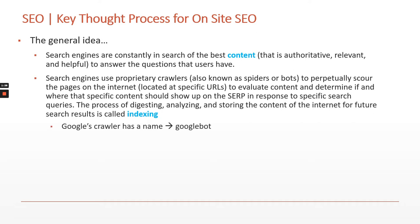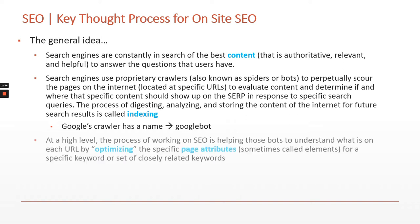Google, for example — Google's spider or crawler has a name: it's Googlebot, and it's just constantly out there scouring the internet.